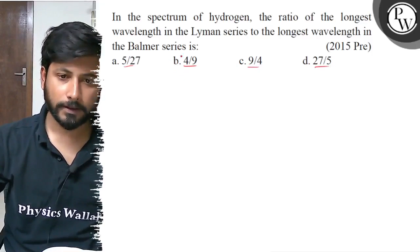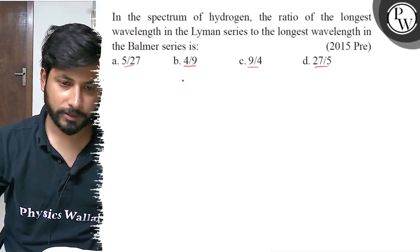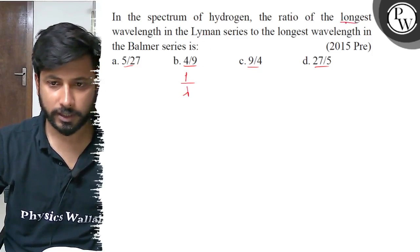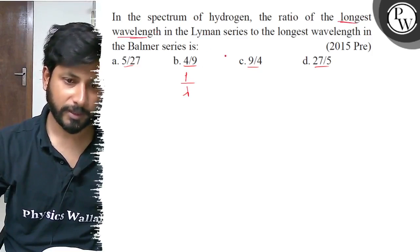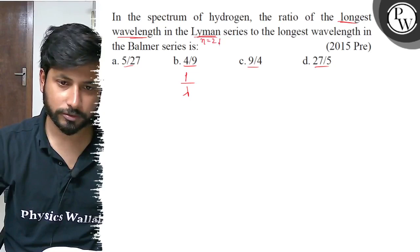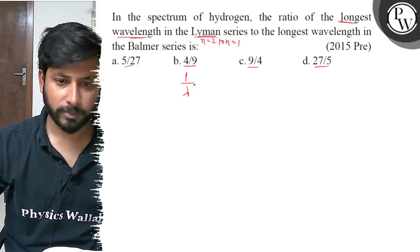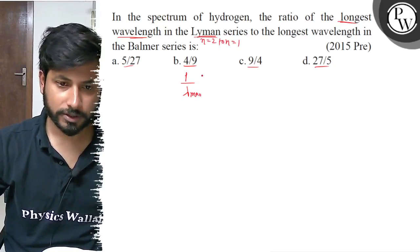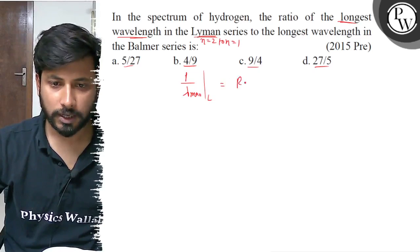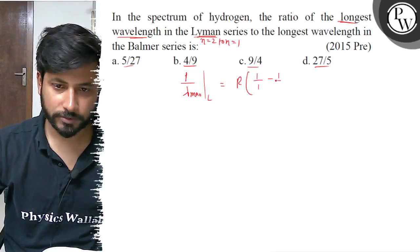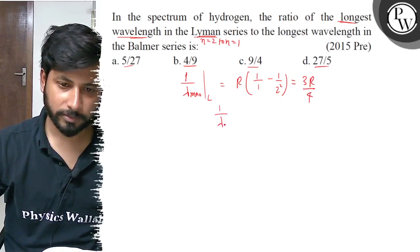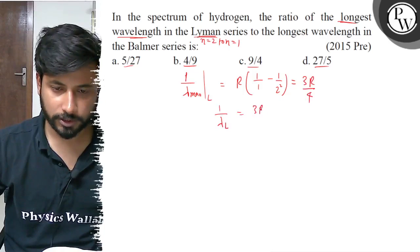If we talk about Lyman series, longest wavelength is 1 by lambda. Longest wavelength is minimum energy. Minimum energy should be in Lyman series, which should be N equals to 2. So 1 by lambda max for Lyman series, this is R, 1 by 1 minus 1 by 2 per square. 1 minus 1 by 4 is 3R by 4. So 1 by lambda L equals 3R by 4.